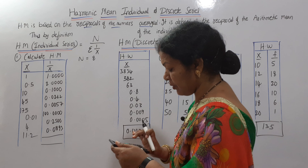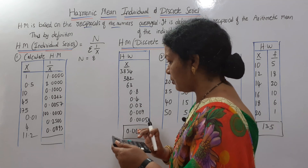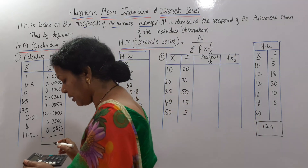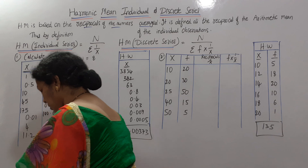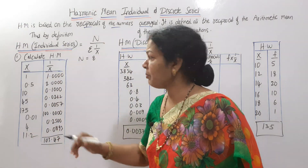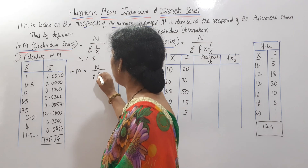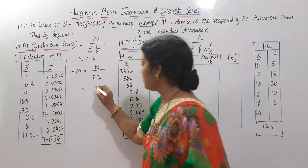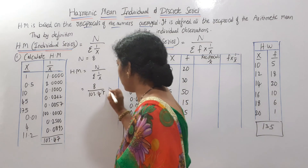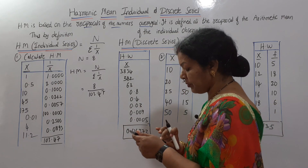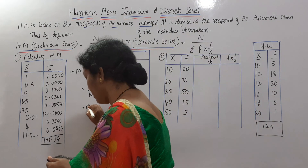1 divided by 4 is 0.25. 1 divided by 11.2 is 0.089. Once I press MR, I am getting 103.467 — let's take 103.47. So this is Σ(1/x). Now apply in the formula: harmonic mean = n / Σ(1/x). N is 8, and Σ(1/x) is 103.47. So 8 divided by 103.47 comes to 0.05. This is the answer.